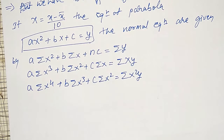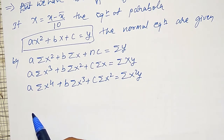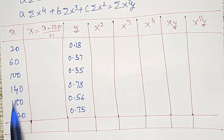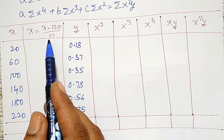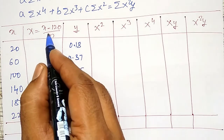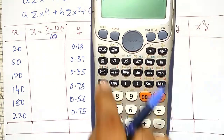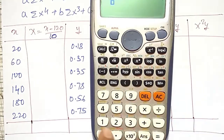According to these normal equations, I have to prepare a table to find out the summations. The given small x and small y values are provided, but for calculation purposes I am substituting capital X = (x − 120) / 10 so that the x values become very small. My x values: 20 gives −10, 60 gives −6, 100 gives −2.